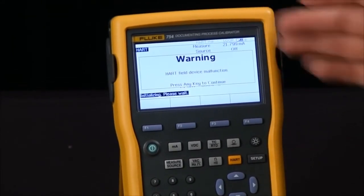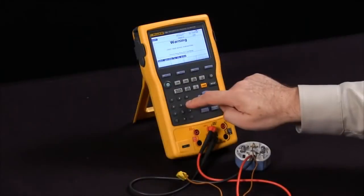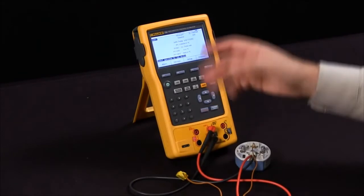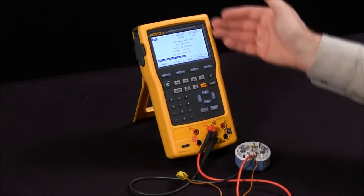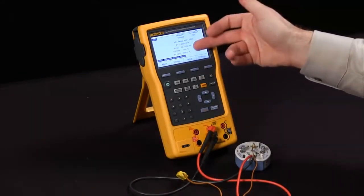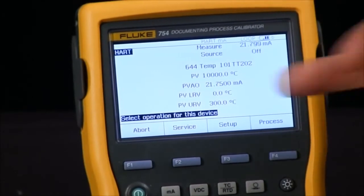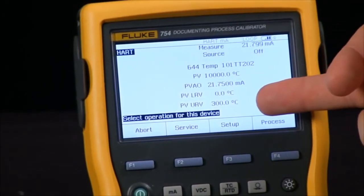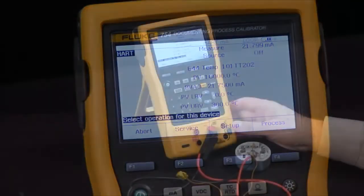It will give me all of the parameters of the device. It is also letting me know that it is in failure mode right now because we are not sending any signal to it. So we see that as a temperature transmitter, my lower range value is zero degrees C. My upper range value is 300 degrees C.